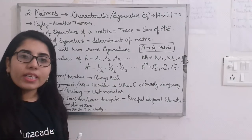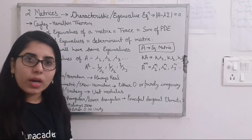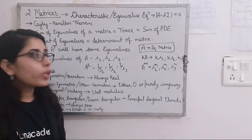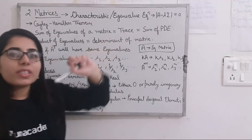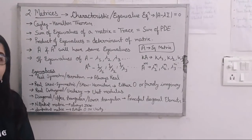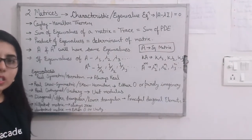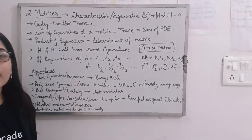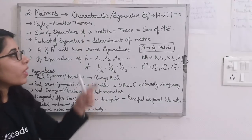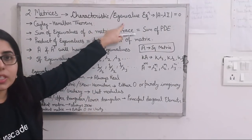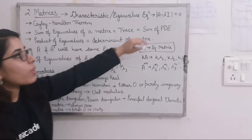After solving the characteristic equation, you get an equation in terms of lambda. Wherever lambda is present, what you will do is put the given matrix A in place of lambda. So the statement of the Cayley-Hamilton theorem is: every square matrix satisfies its own characteristic equation. That means, for any square matrix, the characteristic or eigenvalue equation — which is in terms of lambda — that matrix will satisfy that particular equation.